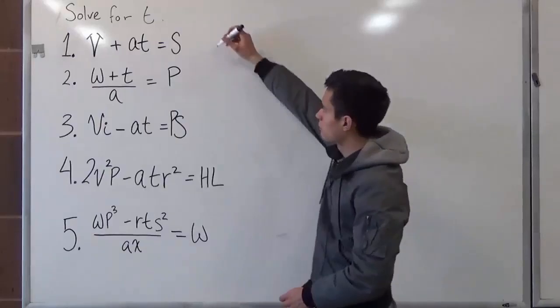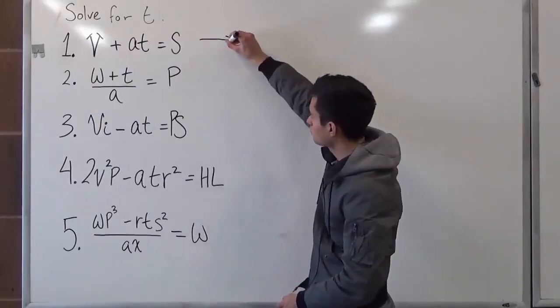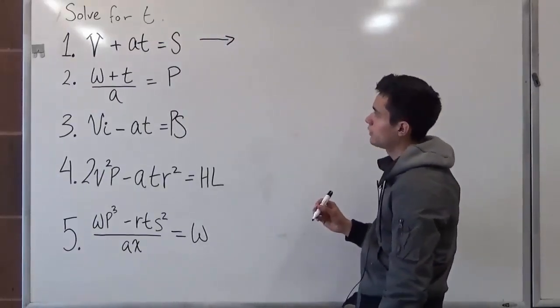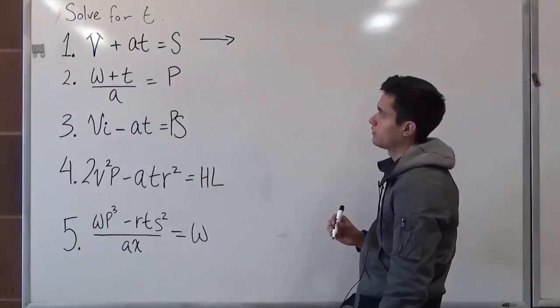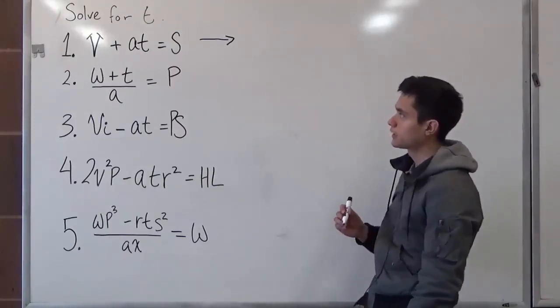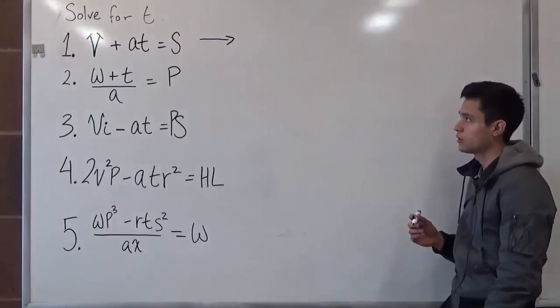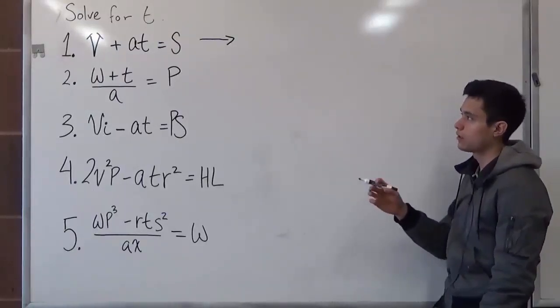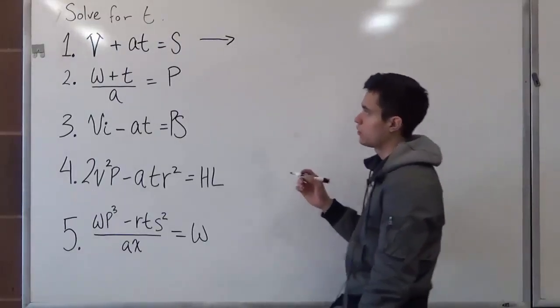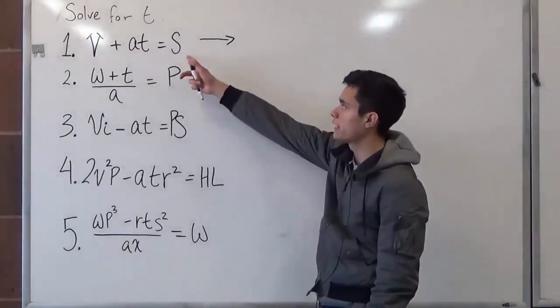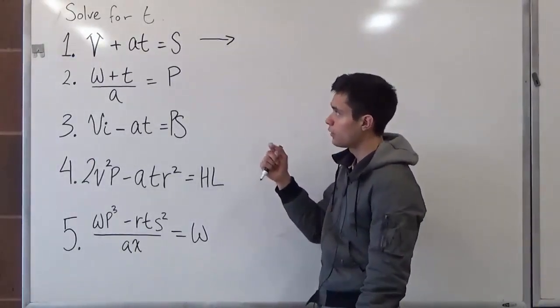So let's start with problem number one. We have v plus at is equal to s. Since our main objective here is to get t by itself, we want to move all these variables on one side. So we see the first variable, s, and we see v.